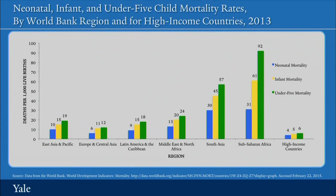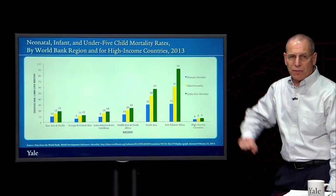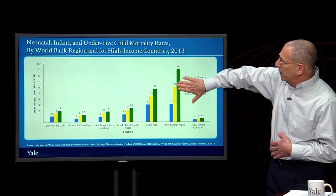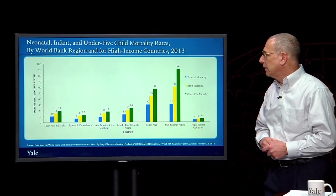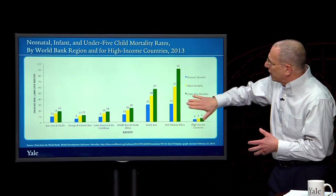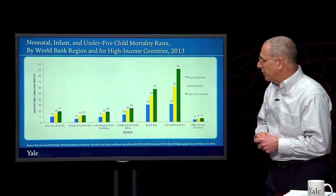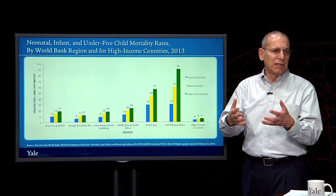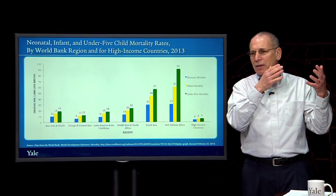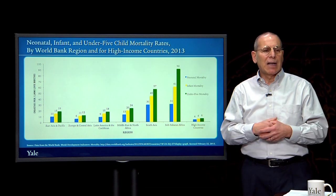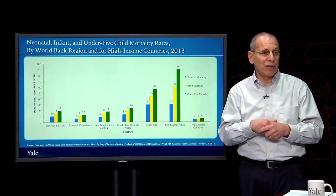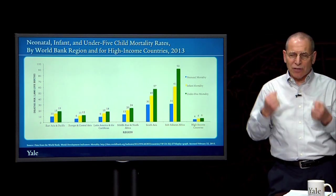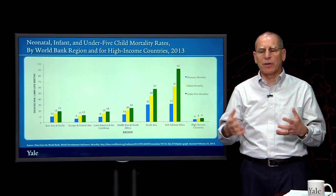Between birth and the first 28 days, about a third of all under-five deaths will occur. Between the first month and first year, there's another third. And between the end of the first year and the fifth year, there's another third still. In sub-Saharan Africa, somewhat uniquely — and mirrored somewhat in South Asia — children who survive to 28 days still face substantial risks of dying between their first month and first year, and those who survive to their first birthday still face additional risks through their fifth birthday.